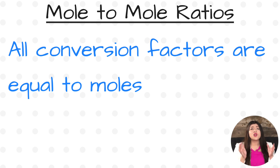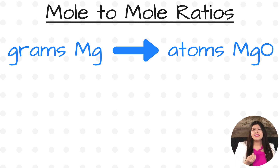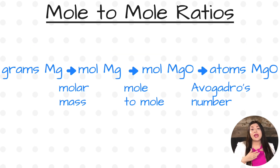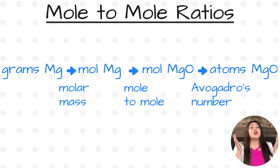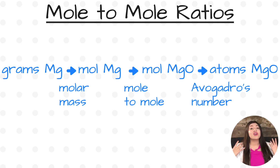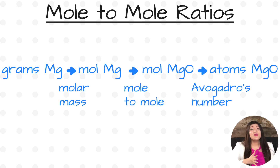So if you don't know where to start, start with converting your given unit to moles. For example, if you're going from grams of magnesium to atoms of magnesium oxide, start with going from grams of magnesium to moles of magnesium using your molar mass as your conversion factor. Then moles of magnesium to moles of magnesium oxide using a mole-to-mole ratio. And then going from moles of magnesium oxide to atoms of magnesium oxide using Avogadro's number. So if you don't know where to start, start with your given unit and change that to moles. And there you have it!